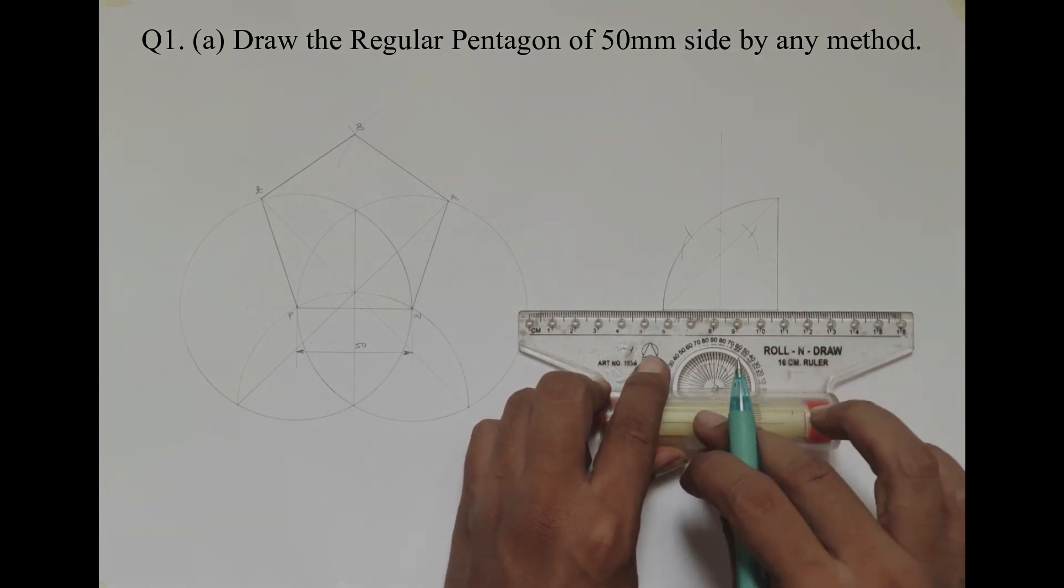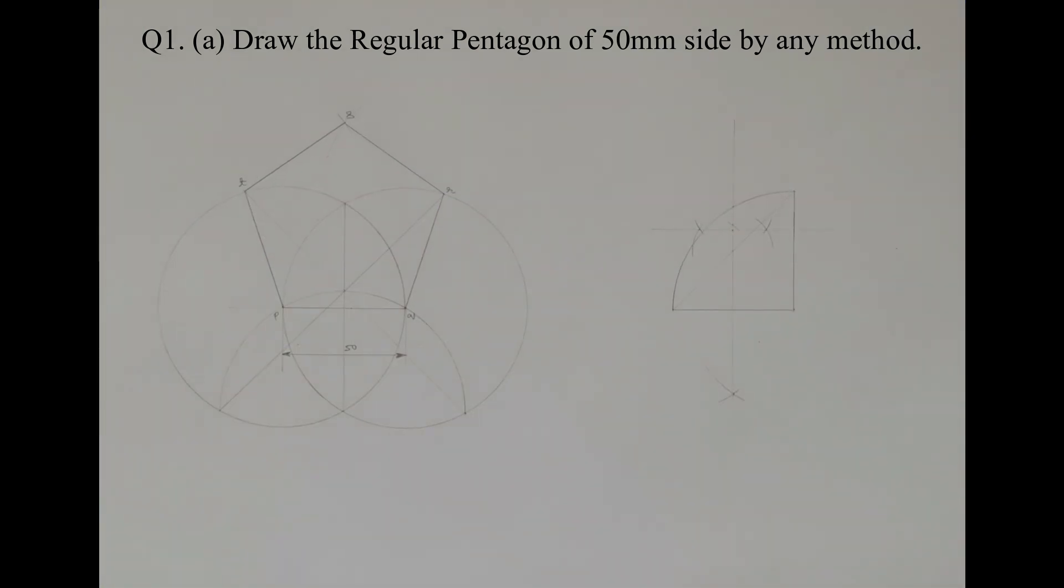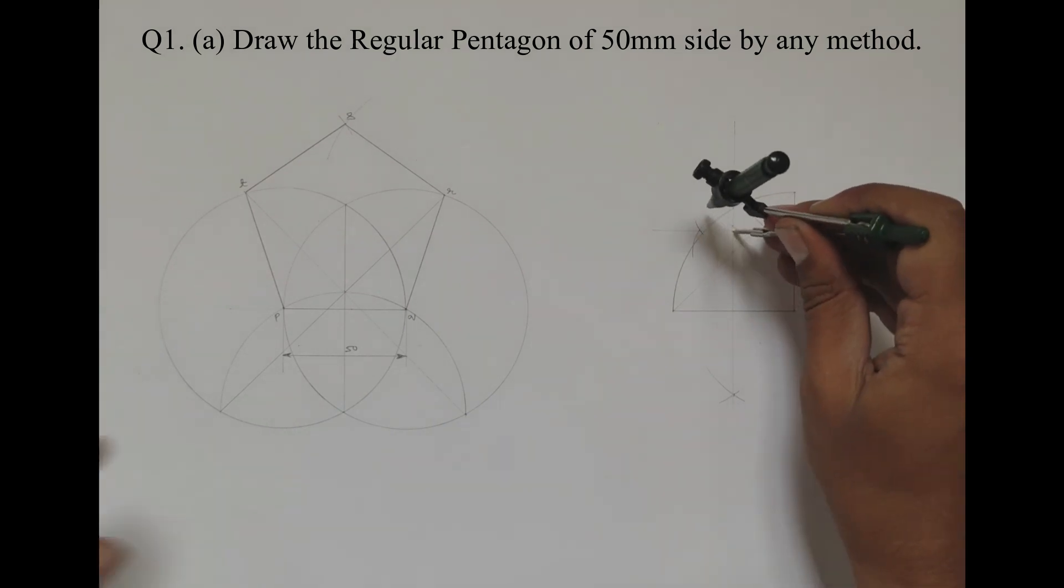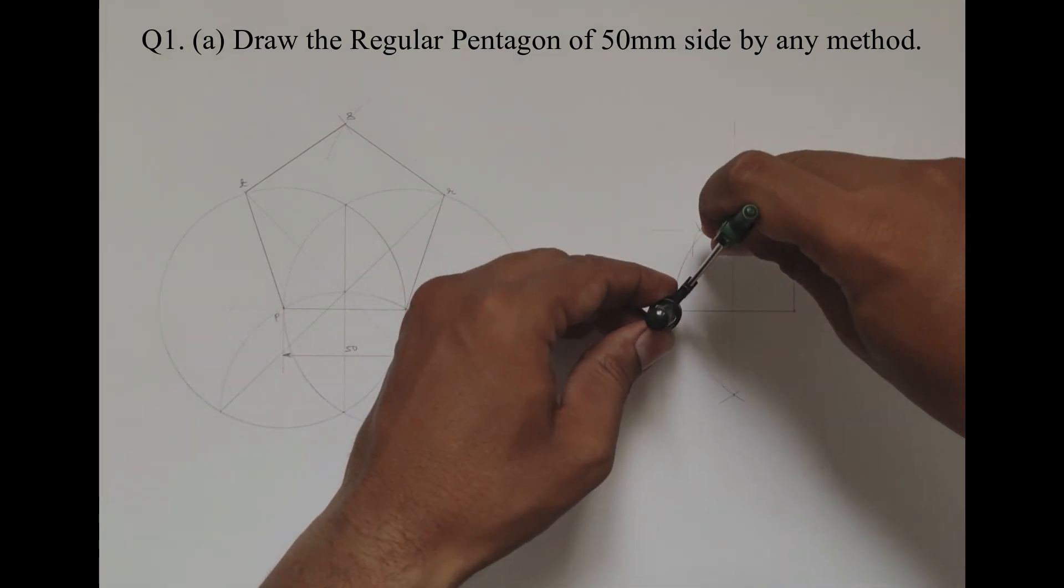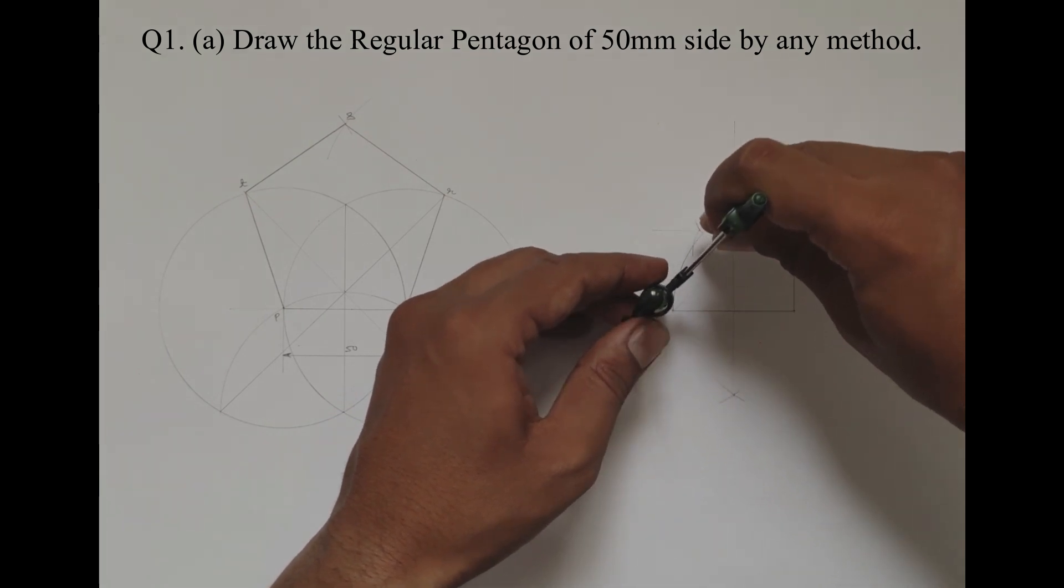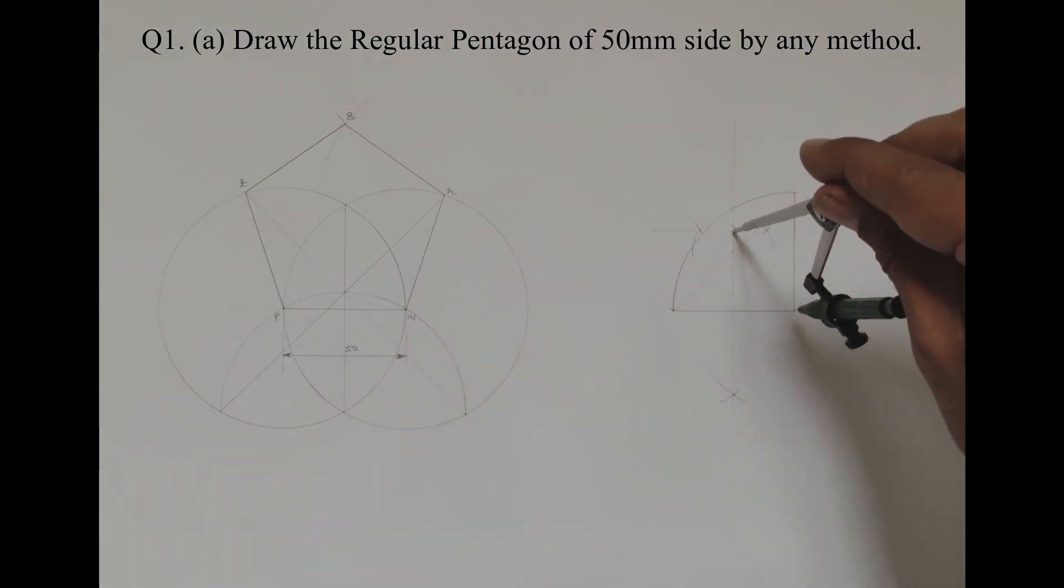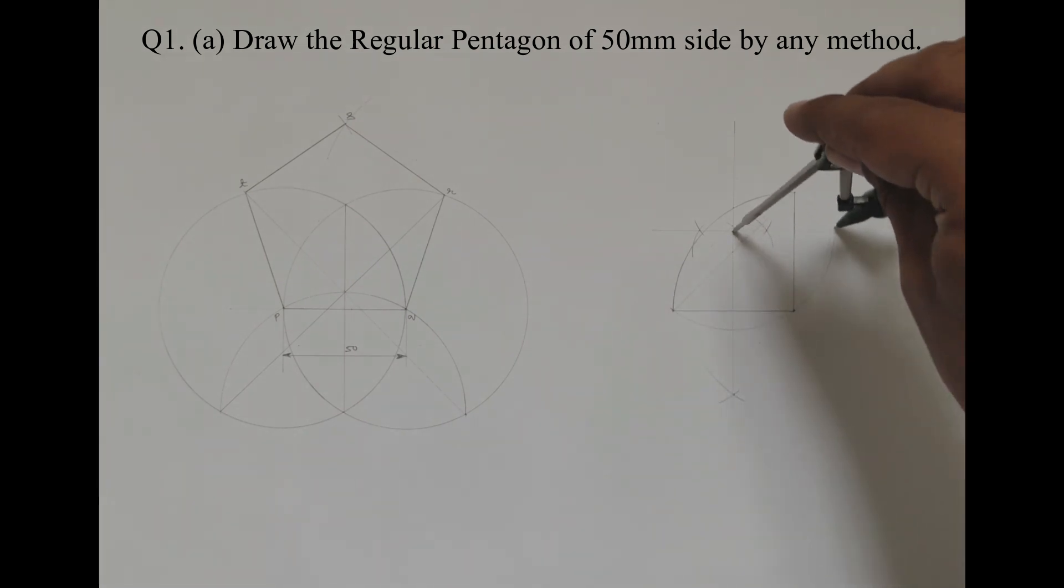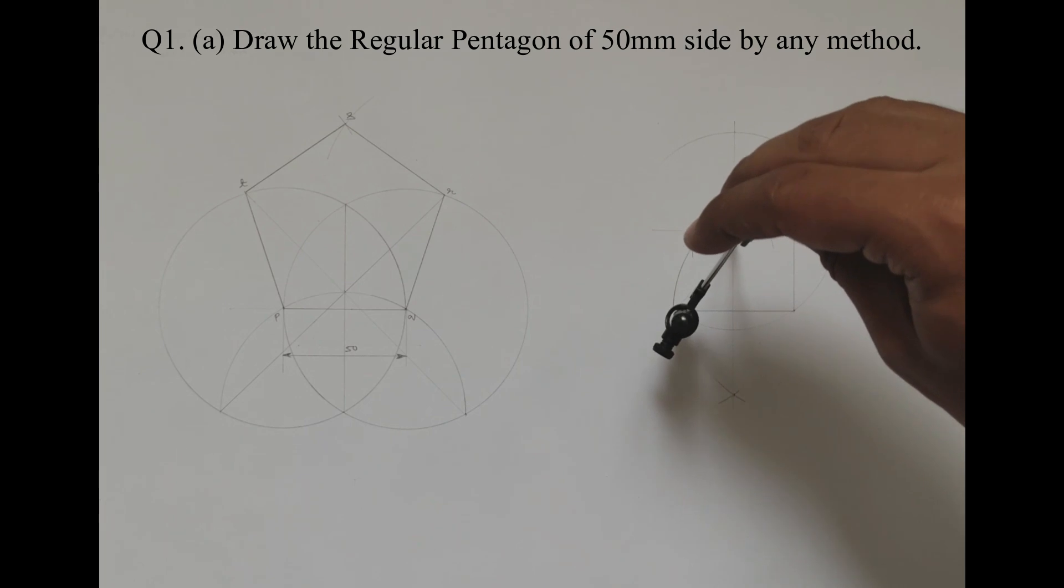So this is the bisector and this is the point which is to be used as center for our pentagon. Using this as the center and radius equal to any point of this horizontal line, both distances will be same.